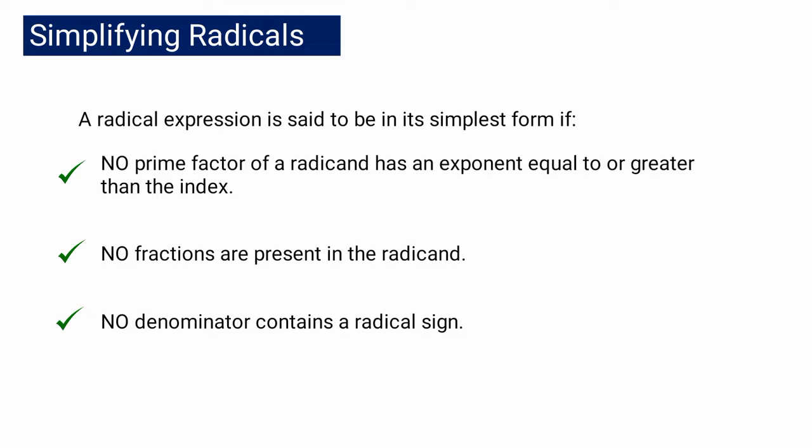These are the three conditions for us to say that a radical expression is already in the simplest form. One, there should be no exponent equal or greater than the index. Number two, there should be no fraction in the radicand. And number three, there should be no radical sign in the denominator.